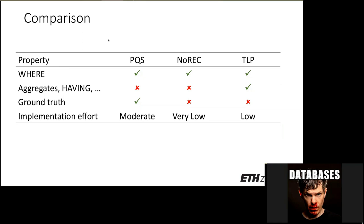Comparing the three approaches: all three can test WHERE clauses, but only TLP is applicable to comprehensively test other features such as aggregate functions. PQS, the first approach, is the only one that can establish a ground truth, which is also reflected in higher implementation effort. TLP has quite low implementation effort — as demonstrated in the code — and NOREC is even lower. They're basically all based on the same table generator and query generator, just configured to provide the specific test oracle defined.